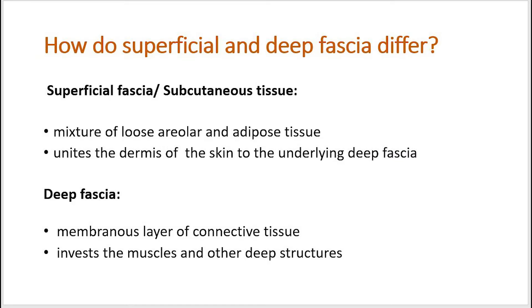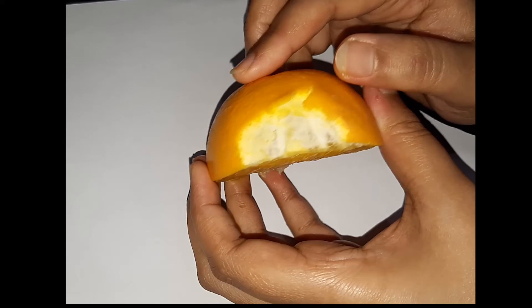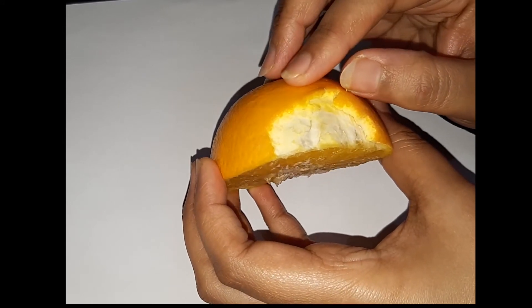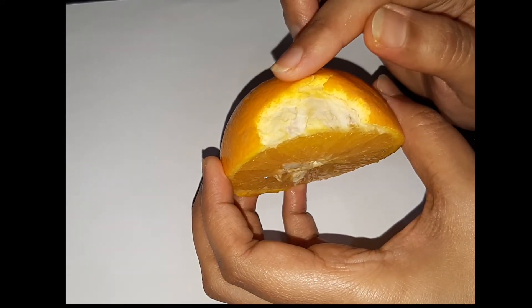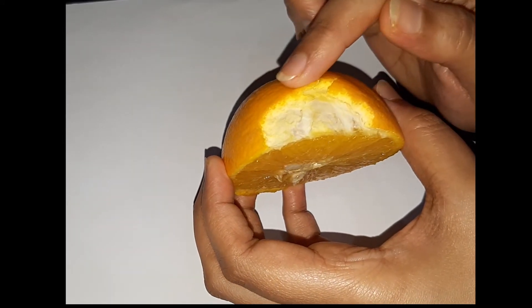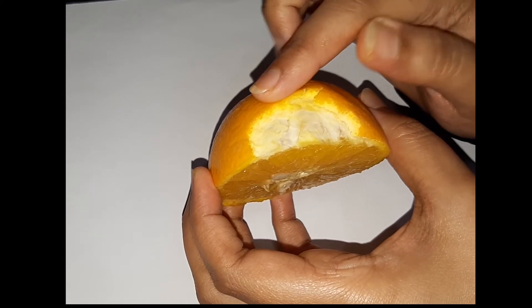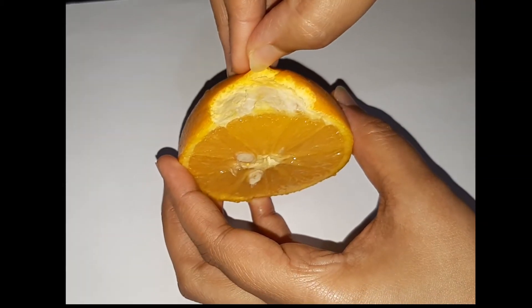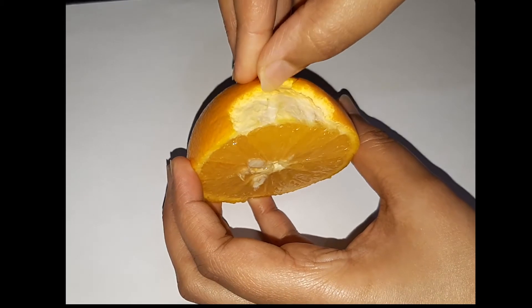Welcome to another video. The topic of discussion is how do superficial and deep fascia differ from each other. I would like to explain this concept using this orange skin as an example, as I have done in one of my earlier videos as well. So this is the epidermis, and after that this layer is the dermis.